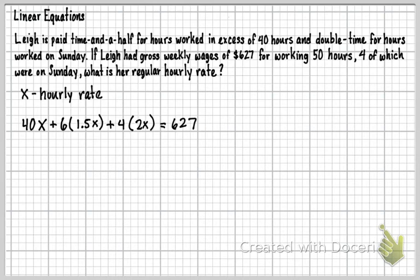So again, this was just 1X that I had to times 40 by because that's her regular rate. And then 1.5 was for anything over 40, and that was six hours. And then on Sunday, she had four hours, so that was 2X, so double her hourly rate. So there's our setup.